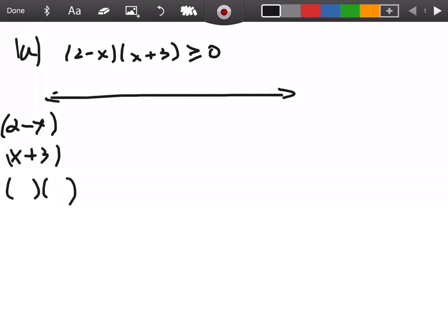Write each factor in its own row. What we're really looking for is what happens when you multiply those two things together. This thing times this thing has got to be greater than or equal to zero, which tells you right away these either both have to be positive, or they both have to be negative.